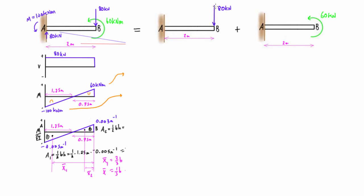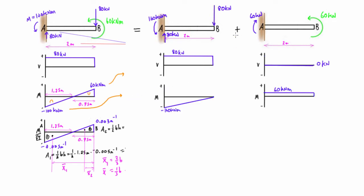When we do this by superposition, we would draw the shear force diagram for each of these and then the bending moment diagram for each one as well. Because we're going by the method of superposition, the actual bending moment diagram can be represented by the sum of these two bending moment diagrams.